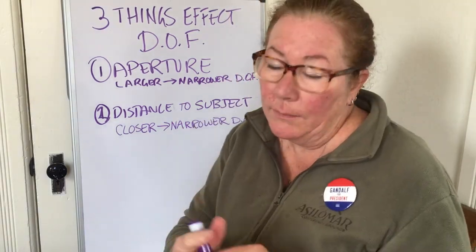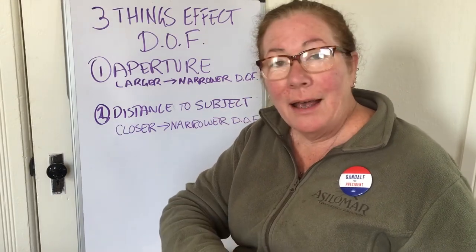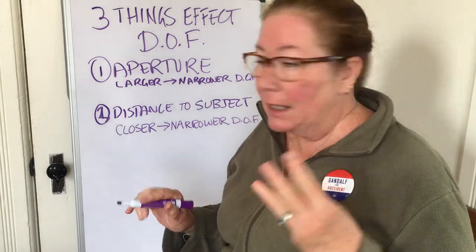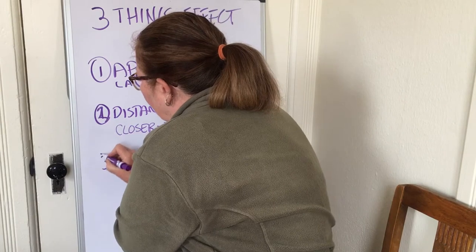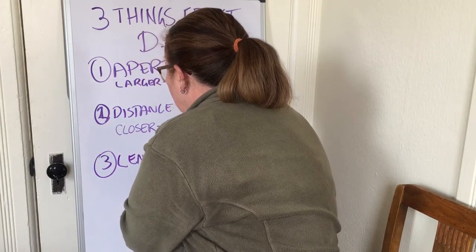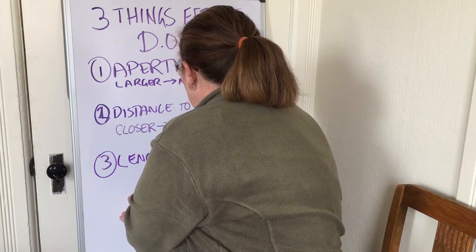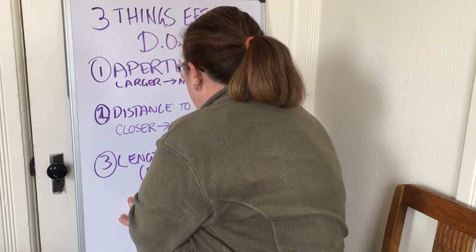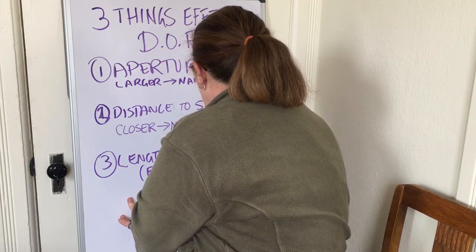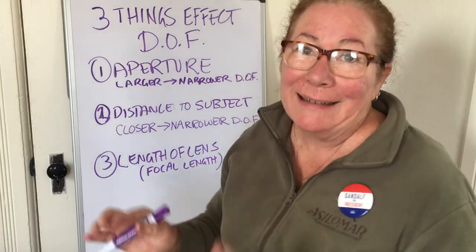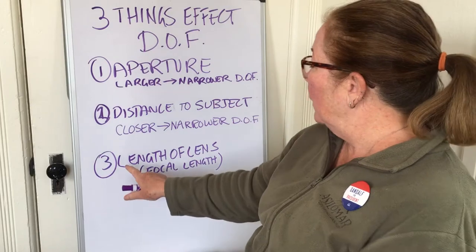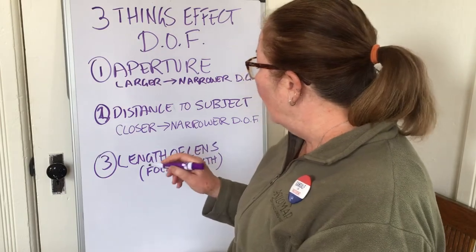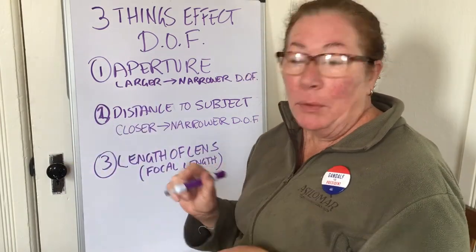The third thing that affects depth of field is the length of the lens, which is called the focal length. Focal length just means how long the lens is. The longer the lens, the narrower the depth of field.